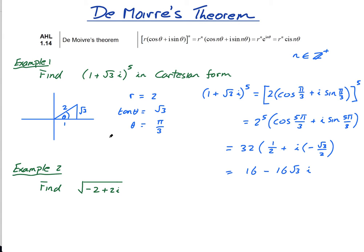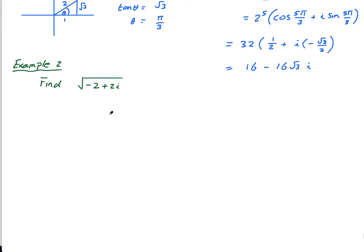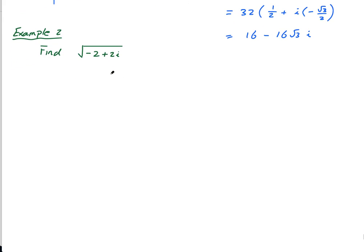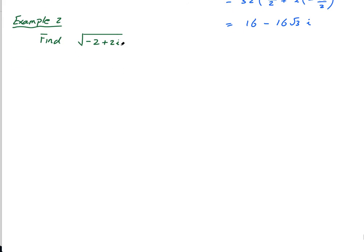Okay, next one. This. So the only kind of difference with this is, well, the exponent is a rational number. It's going to be a half, and I've just written it as a square root. So the square root of negative 2 plus 2i equals negative 2 plus 2i to the power of a half.